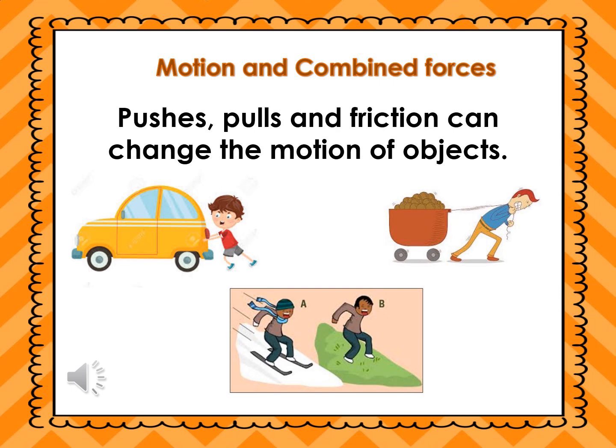Third picture: in A, the boy is skating on the snow; in B, the boy is sliding down on the grass. Guess in which surface he can move faster — on the snow or on the grass? On the snow, because of less friction. The grass has more friction, so he will be stopped or slowed down.